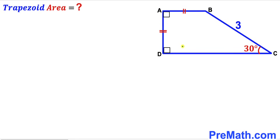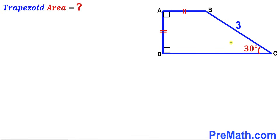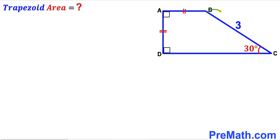Welcome to pre-math. In this video we have this blue trapezoid ABCD such that angle BCD is 30 degrees, side AB is equal to side AD, these two angles are 90 degrees each, and side BC is 3 units. Our task is to calculate the area of this trapezoid ABCD.